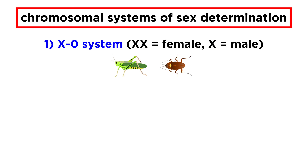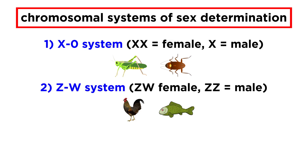Their sperm may contain an X chromosome or no sex chromosome. In various birds, fishes, and certain insects, a ZW system is utilized. Females are ZW, and males are ZZ.